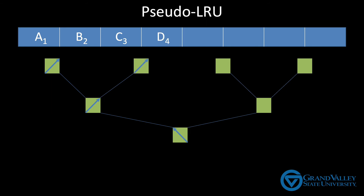So now we access D and update the arrows, and then access E and update the arrows. Notice that the bottom arrow is now pointing to the right half of the cache, which is where the most recent access is. And then we access F, G, and H. So now our cache line is full — all the boxes have arrows in them. When we follow the arrows from the bottom, it points to the most recent access, which is variable H. The other boxes just retain whatever state they were last set to.